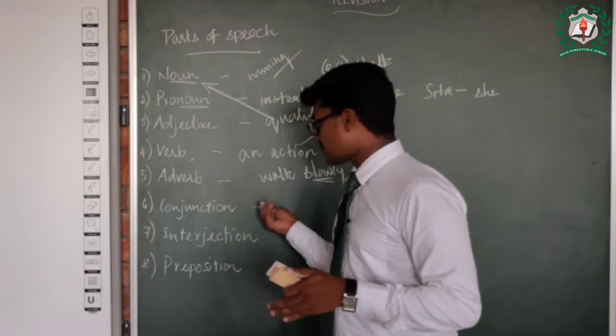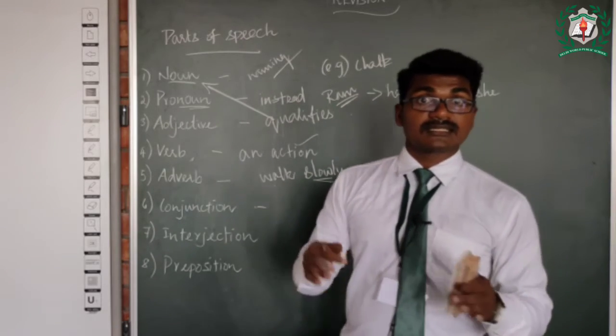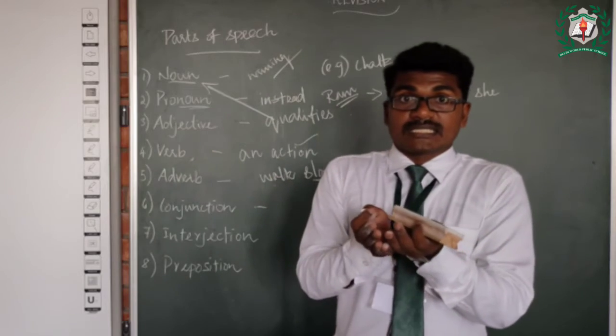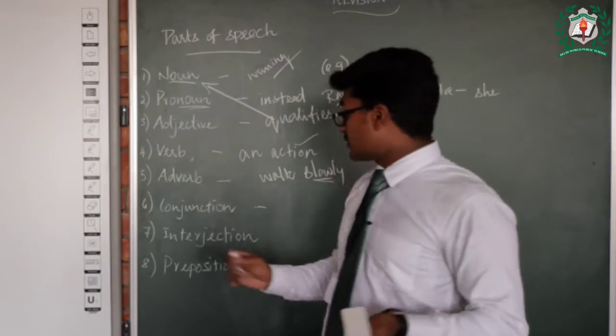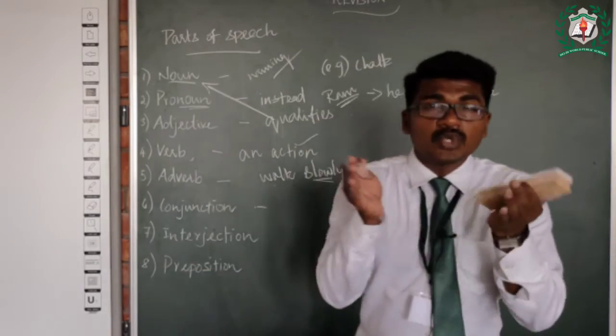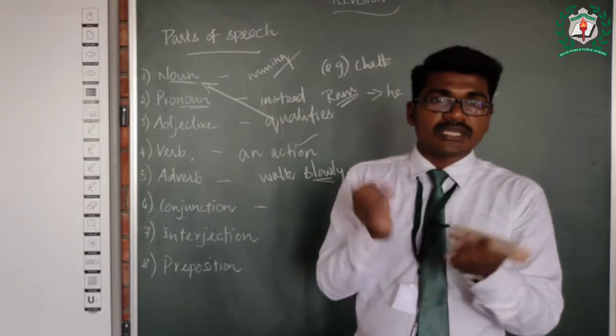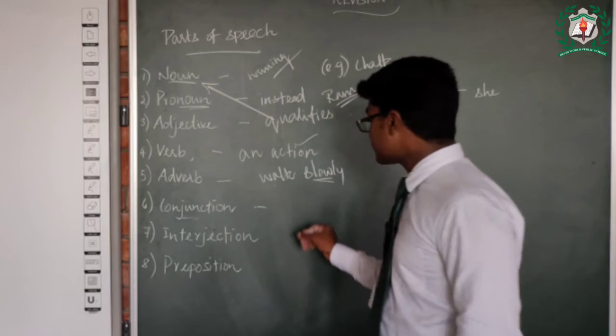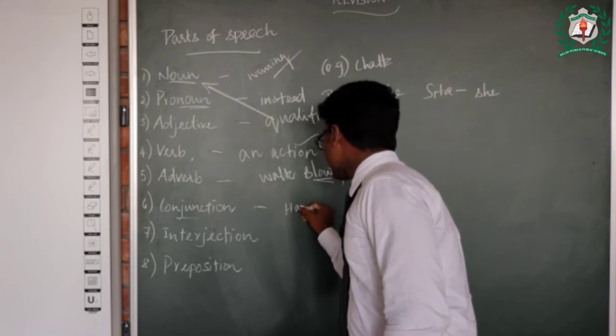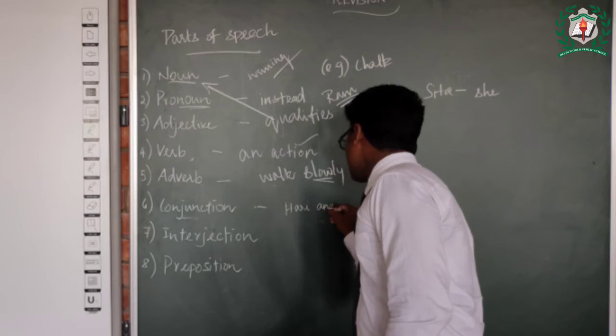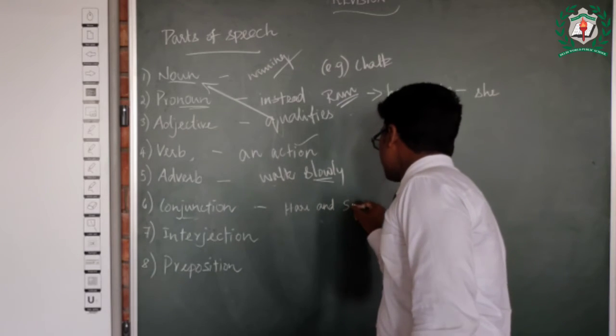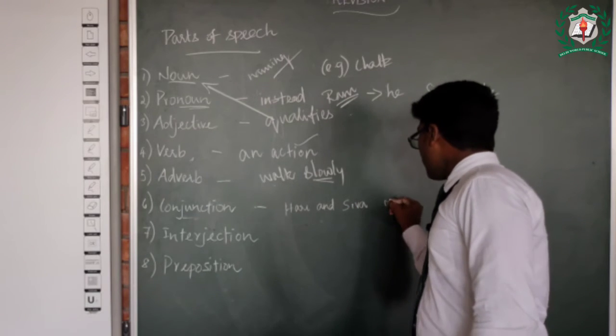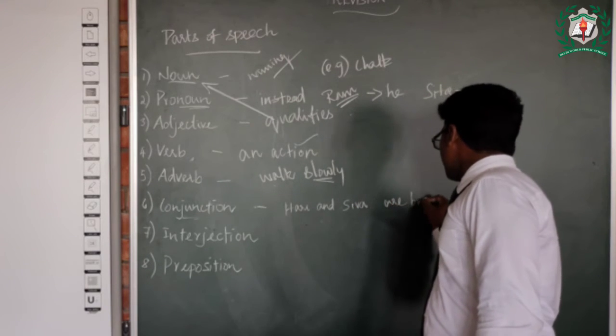Next, conjunction. I have said that junction where everyone means it is called junction. Now here when two words or phrases joins together, we say that as conjunction. Example, Hari and Siva. Hari and Siva are brothers.